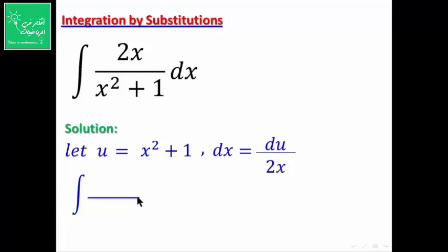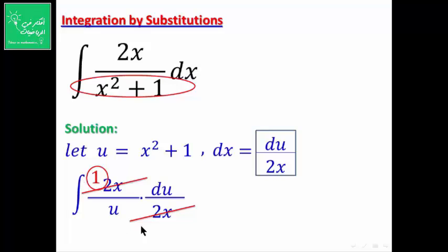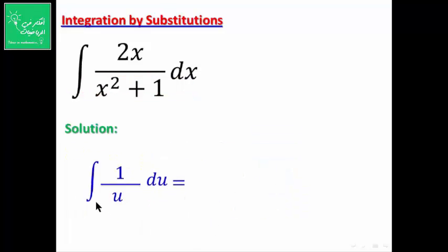نعوض في التكامل: البسط 2x يبقى كما هو، والمقام x² + 1 نستبدله بـ u، و dx نستبدله بـ dy/(2x). نلاحظ أن 2x في البسط تلغي 2x في المقام، فيتبقى ∫ (1/u) du.